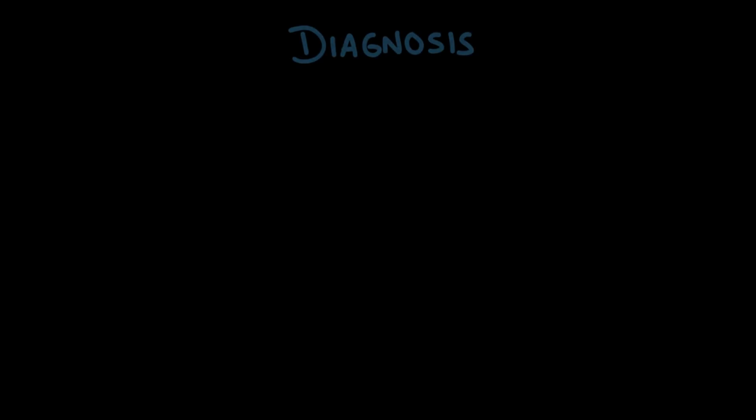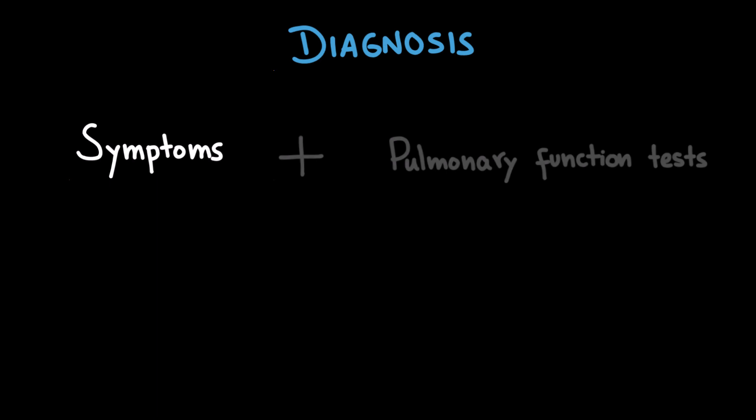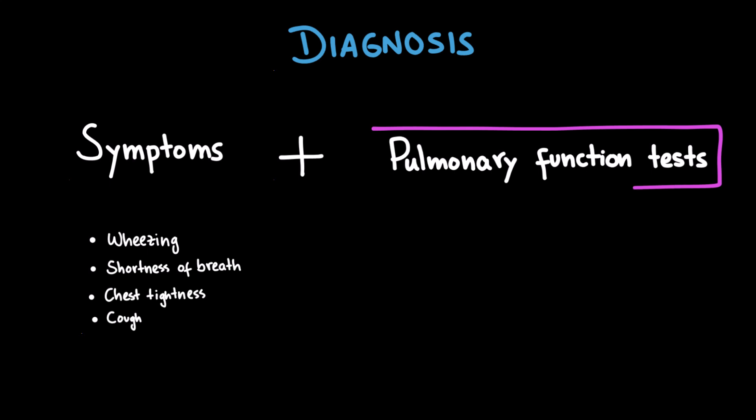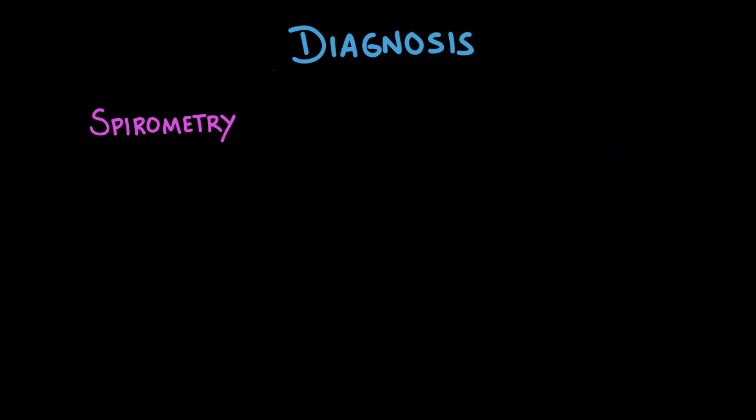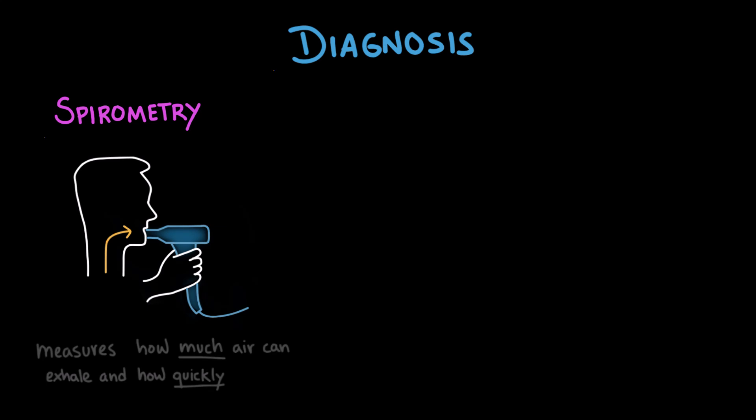Diagnosing asthma involves combining the patient's symptoms, which we've just discussed, with pulmonary function tests. We usually start by suspecting asthma based on the symptoms, things like wheezing, shortness of breath, chest tightness, and cough. But to confirm the diagnosis, we need to perform a spirometry test. In spirometry, the patient blows into a device that measures how much air they can exhale and how quickly. From this test, we get several important values.